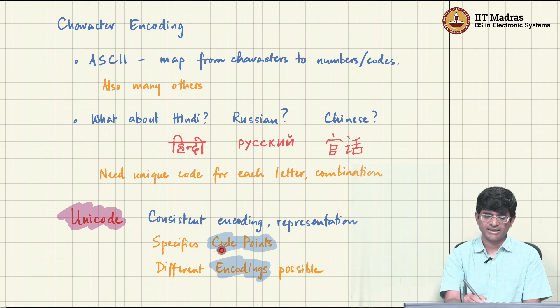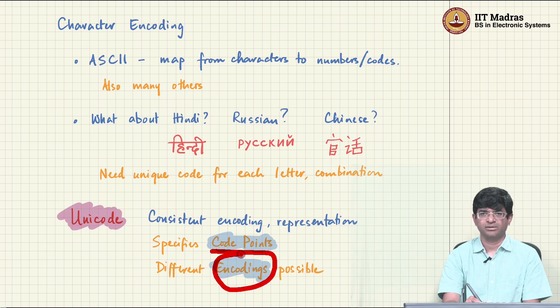What you need in addition to that is how does a code point actually get converted into an encoding? And the encoding is actually the set of numbers that tells you this is the character that is being represented.